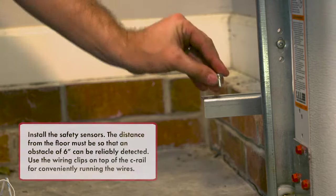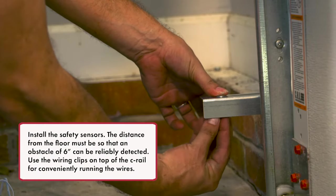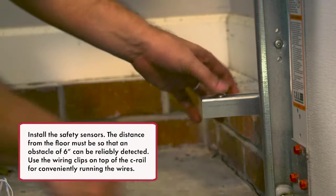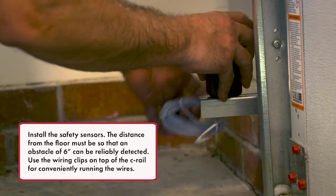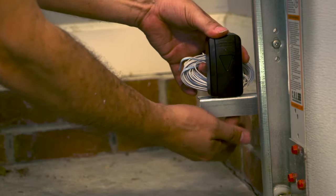Install the safety sensors. The distance from the floor must be so that an obstacle of 6 inches can be reliably detected. Use the wiring clips on top of the C-rail for conveniently running the wires.